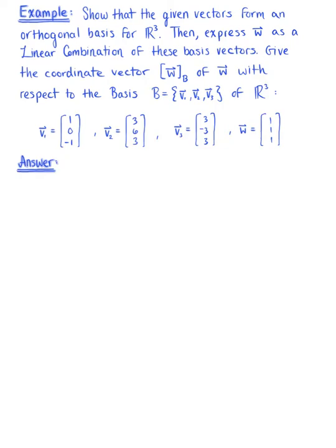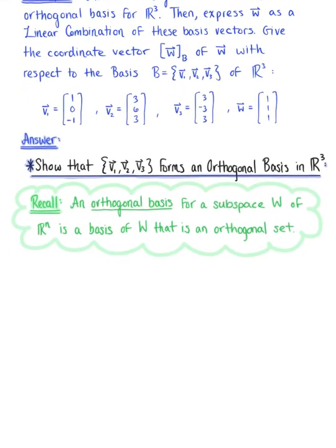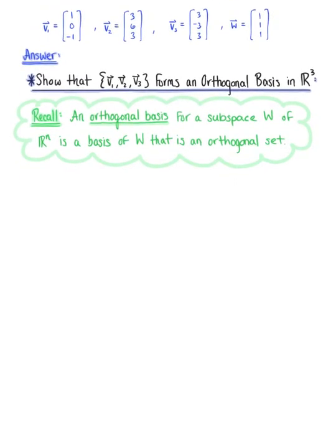The first thing we need to do is show that the set of vectors v sub 1, v sub 2, v sub 3 form an orthogonal basis for R3. Recalling the definition, an orthogonal basis for a subspace w of Rn is a basis that is an orthogonal set. To verify this, we need to first show that the vectors are orthogonal by taking the dot product of all pairs of distinct vectors and showing that their dot product is equal to zero.